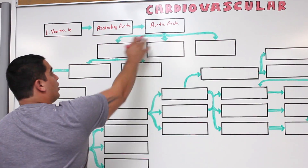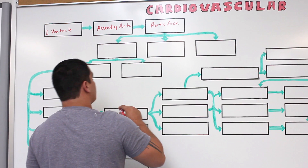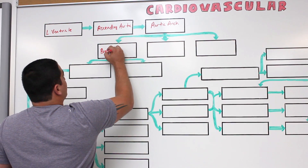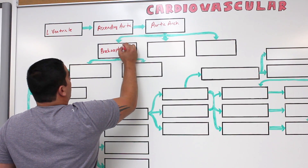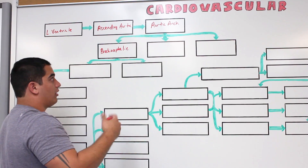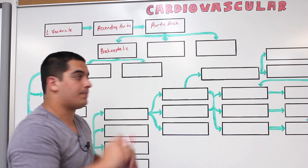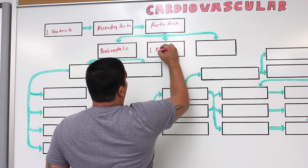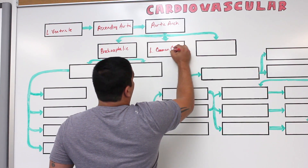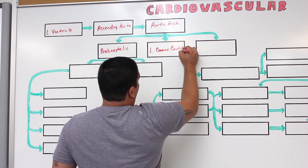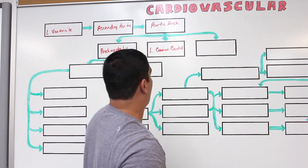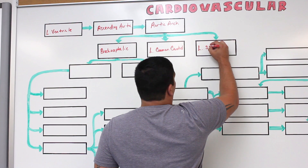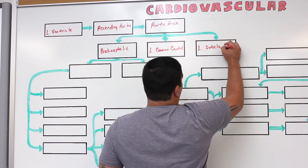Now off the aortic arch, three vessels are going to come off. The first one is going to be called the brachiocephalic trunk or the brachiocephalic artery, which splits. Then the next one is going to be called the left common carotid artery. And then the third and final one that comes off the aortic arch is called the left subclavian artery.